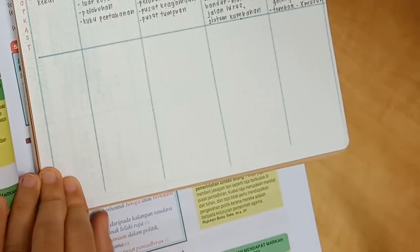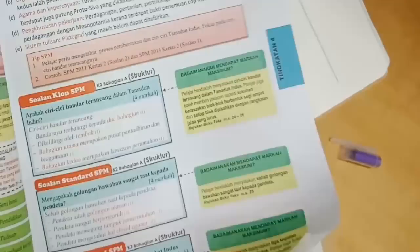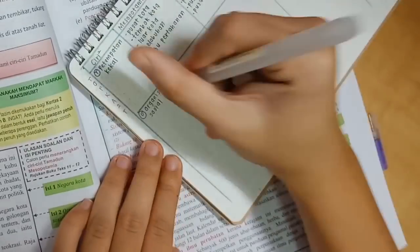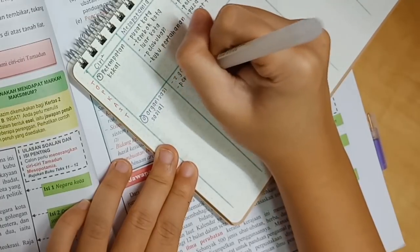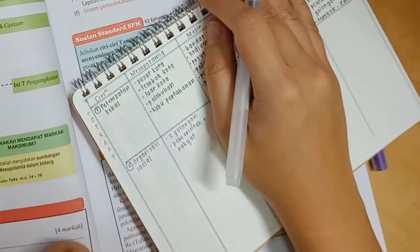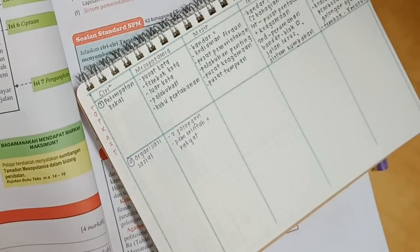Now that we are done with Pertempatan Kekal, I draw a line and now we're moving on to O which stands for Organisasi Social. So I decided to use a different colour pen just to make it easier to differentiate between each ciri-ciri. So I'm using a purple pen now and I'm just continuing the process of picking out important information from the text.